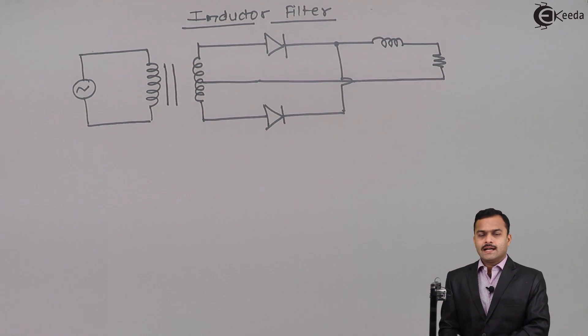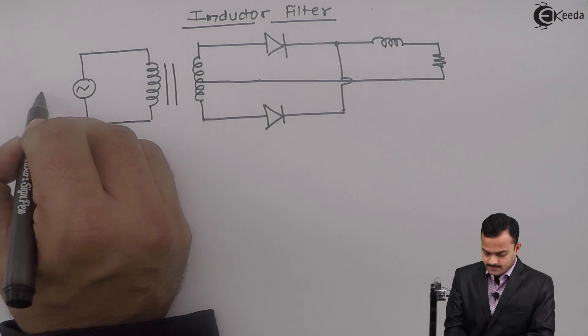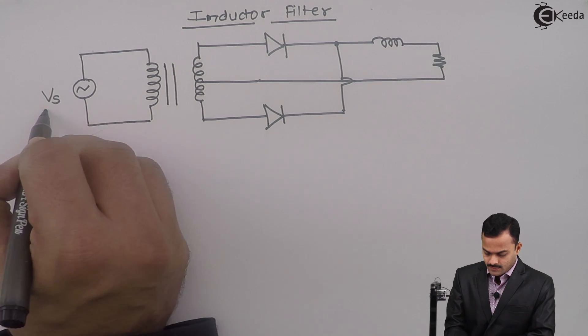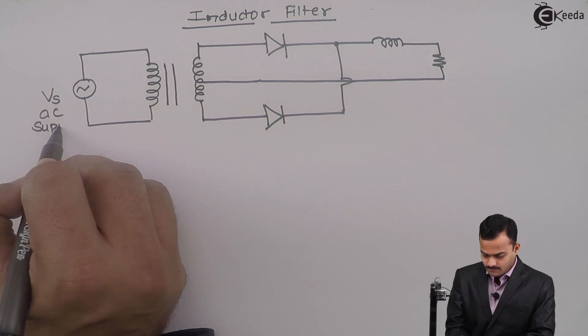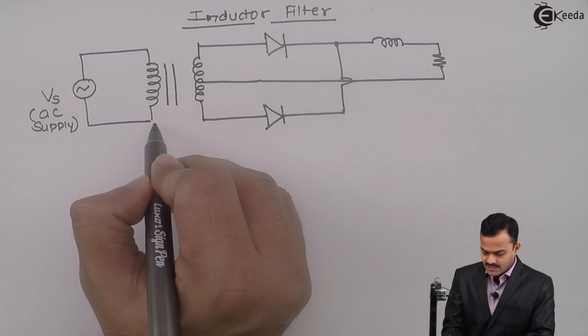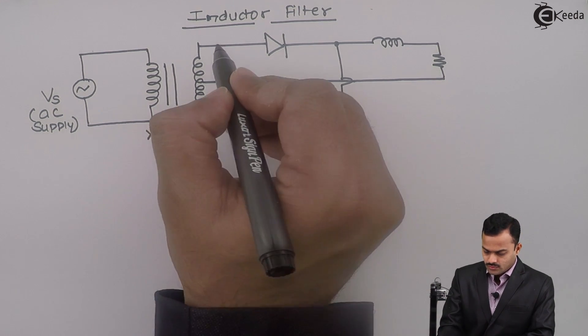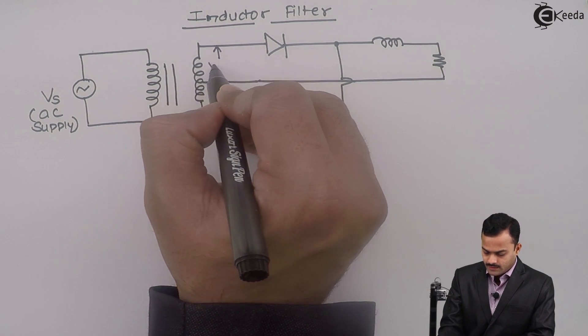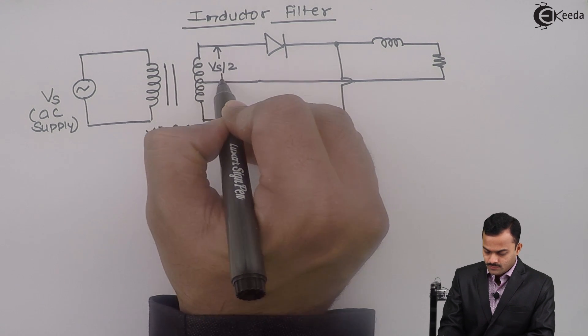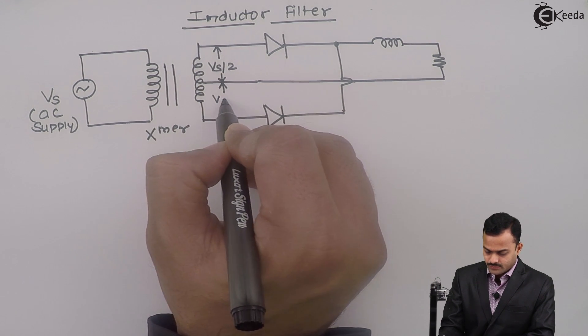So here I have drawn full wave rectifier, where this is VS, AC supply. This is a transformer, so that here you will get VS by 2 and here also it is VS by 2.